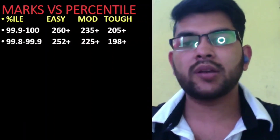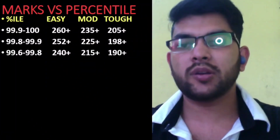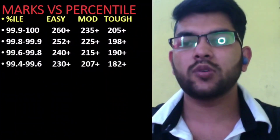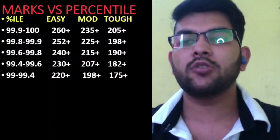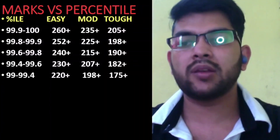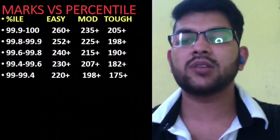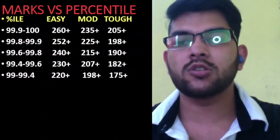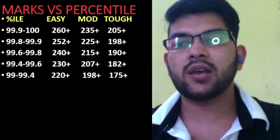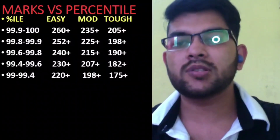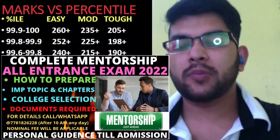Now I will discuss only moderate paper marks — you can check easy and tough paper marks sidewise. For 99.6 to 99.8 percentile, your marks would be 215 plus. For 99.4 and above percentile, your marks would be 207 plus. For 99 and above percentile, your marks would be 198 — this is an important barrier for students. For easy paper you can get 99 percentile at 220 plus marks, and for tough paper at 170–175 marks. I am providing this data based on extensive research of previous years and current trends, including insights from students I guide personally.